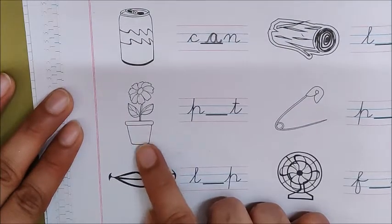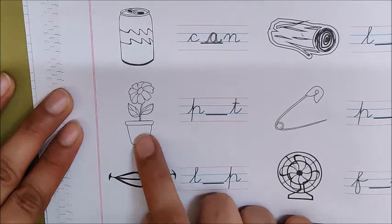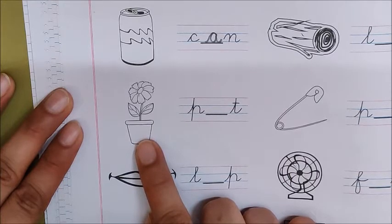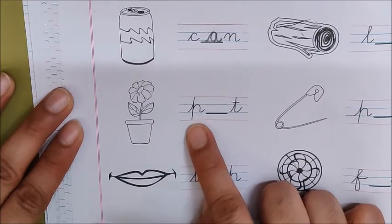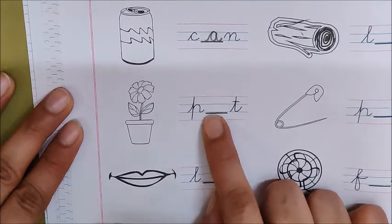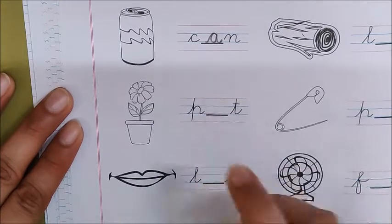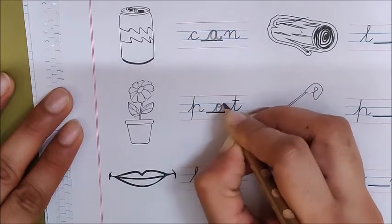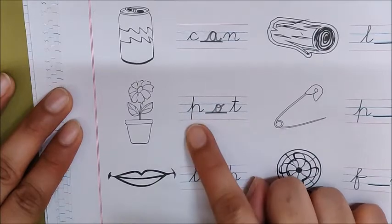Children, look at this picture. What is this? Where is the plant growing? It is growing in a pot. Very good. Tell me the sounds in the word pot. P, o, t. Pot. Good. We have p here. What is missing here, children? O. Smart children. O, t. P-o-t pot.